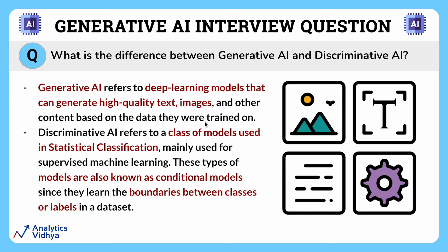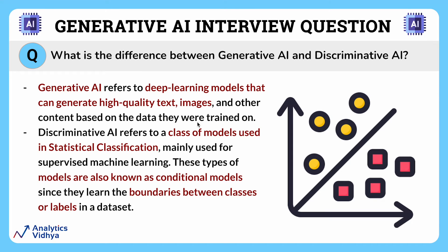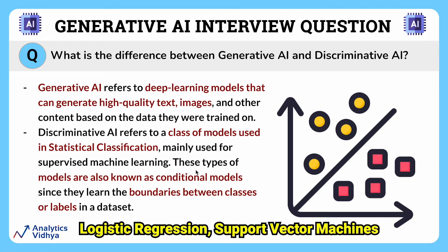We have already covered this topic in detail in our very first question. Now, let's have a detailed look at discriminative AI. Discriminative AI refers to a class of models used in statistical classification, majorly for supervised machine learning. Examples include logistic regression, support vector machines, etc.